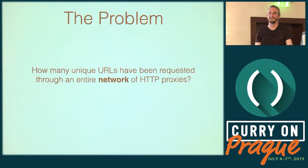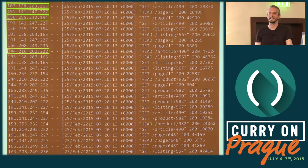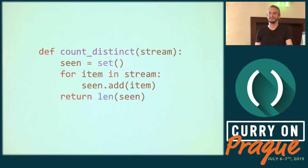The first problem we're going to consider is the count distinct problem — counting unique items in a stream that may contain duplicates, or more formally, finding the cardinality of a multiset. Real-world examples include: how many unique words are in a large corpus of text? How many different users visited a popular website? How many unique IPs connected to a server? How many URLs have been requested through an HTTP proxy? The naive solution is trivial: take a set, add every item in the stream to it, and the output is the length of the set.